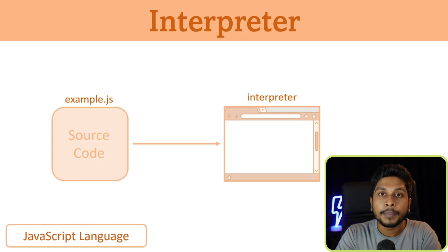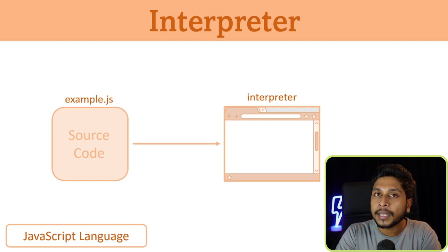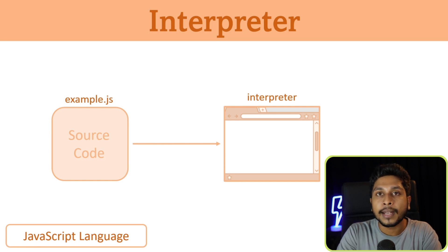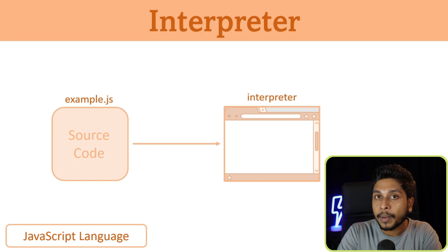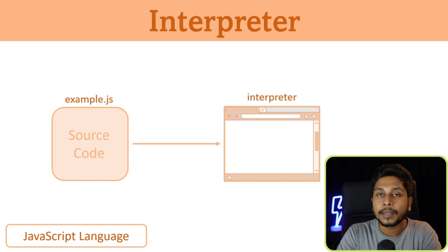Let's talk about the compiled language. You can generate a separate file from the compiler. For an interpreted language, you can read the source code line by line, then display it and execute it. In the web browser, you can use the JavaScript file as well.